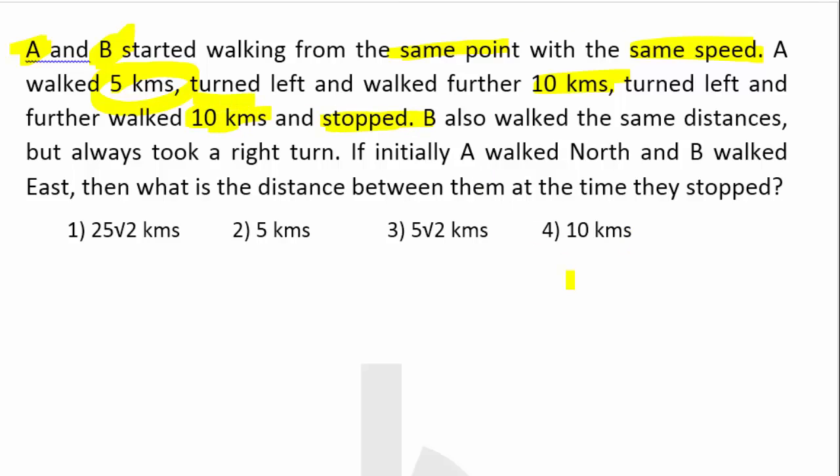B also walked the same distances but always took a right turn. If A initially walked towards north and B walked towards east, what is the final distance between them?